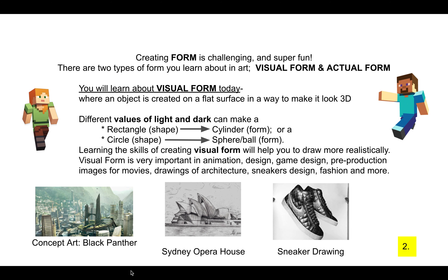Creating form is challenging and super fun. There are two types of form you learn about in art: visual form and actual form. You will learn about visual form today, where an object is created on a flat surface in a way to make it look three-dimensional. Different values of light and dark can make a rectangle — which is a shape — into a form, a cylinder, or a circle — a shape — into a sphere, which is a form.